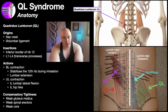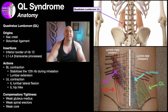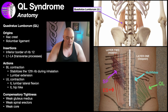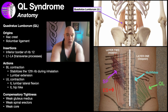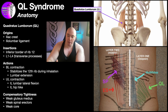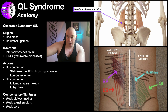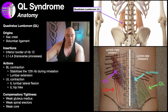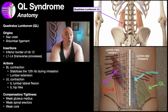Before we get into specific treatment for QL syndrome, we need to understand why it is tight in the first place. I would say 99 out of 100 times it's because it's compensating for weakness elsewhere. To understand this, we look at the actions of the QL and think about what other larger muscles share those actions — because if the prime mover for a particular movement is very weak, that makes it more likely that the QL will tighten up to compensate.